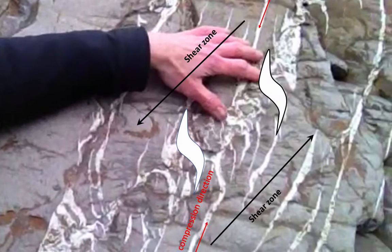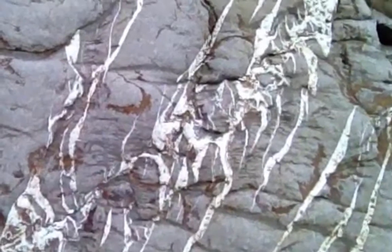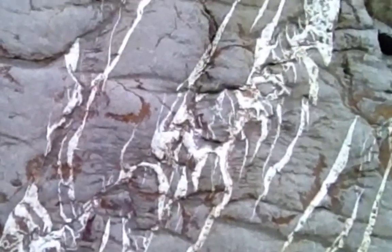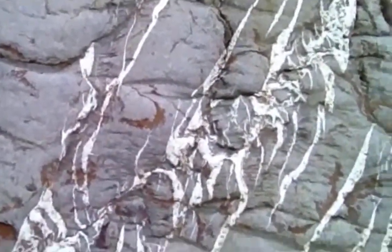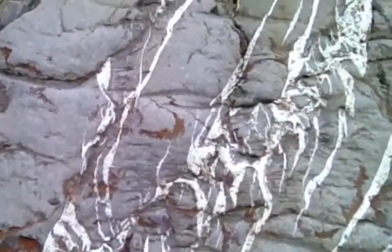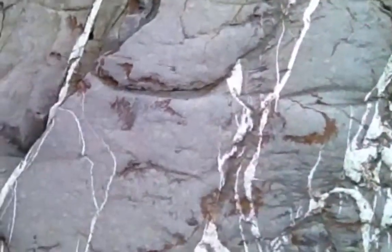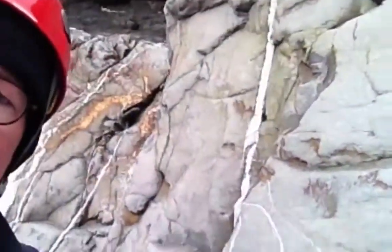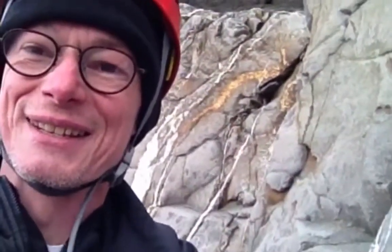So these are en echelon tension gashes which have been rotated by the shear that's caused the stresses, that's caused the fractures to open. This is very common. You see it in a lot of UK mountain settings.